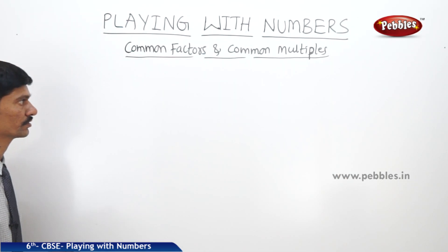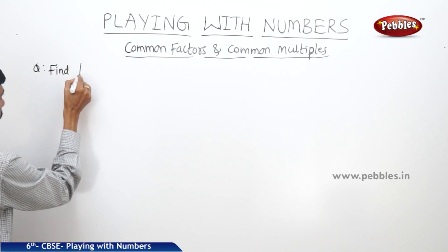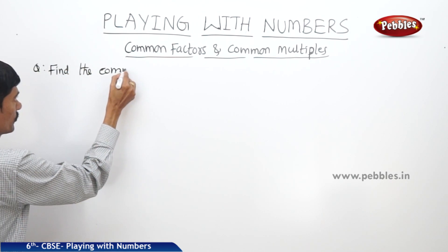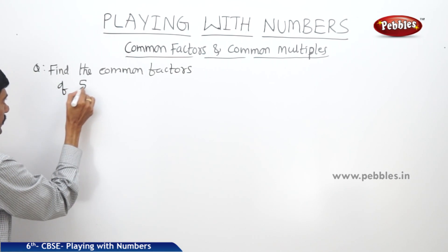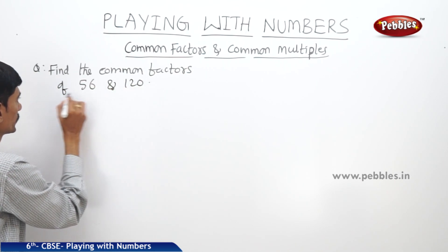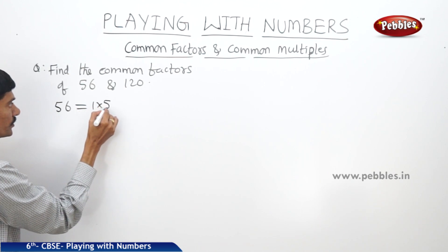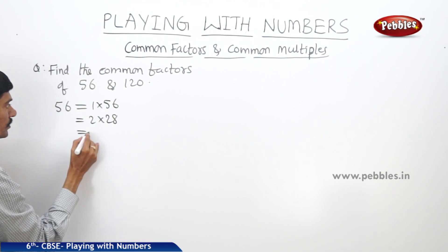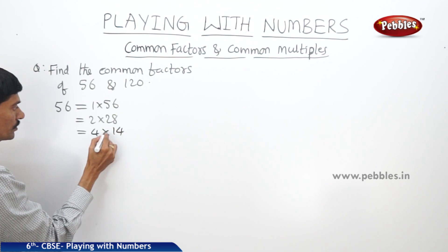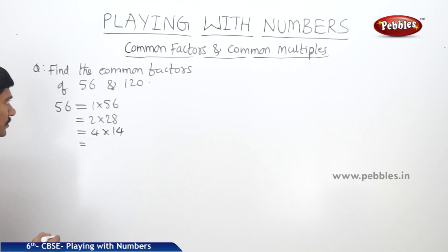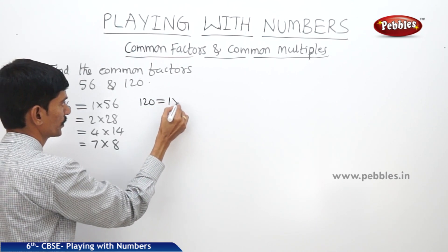Now let us find the common factors of 56 and 120. First, write 56 as a product of factors: 1 into 56, 2 into 28, 4 into 14, 7 into 8. 56 is not divisible by 3, 5, or 6.